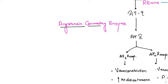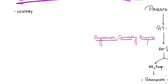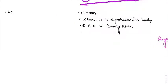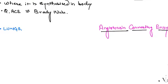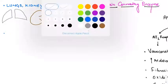Now we move to the second enzyme: angiotensin-converting enzyme (ACE). We will cover its history, where it is synthesized, its relationship with bradykinin, available drugs, mechanisms of action, interactions, side effects, and uses. ACE is synthesized in the lungs, kidneys, and plasma, with the lungs being the most important source.